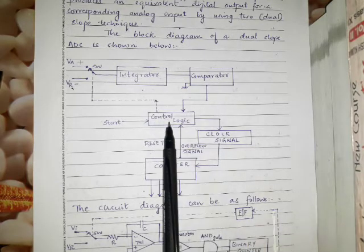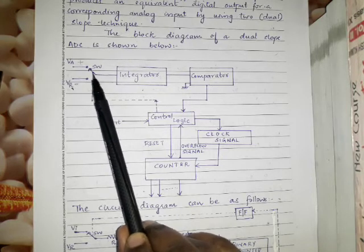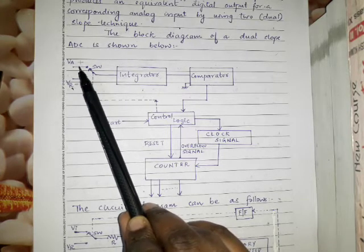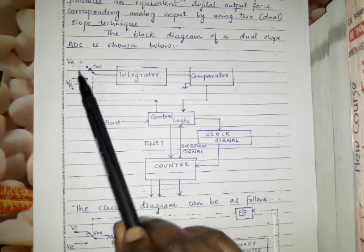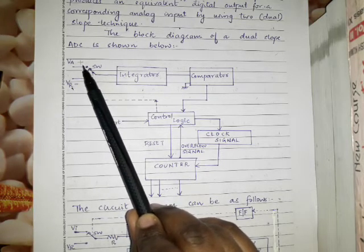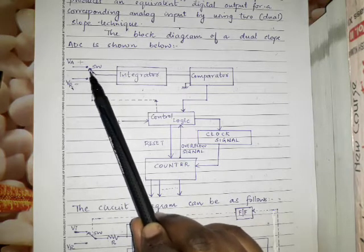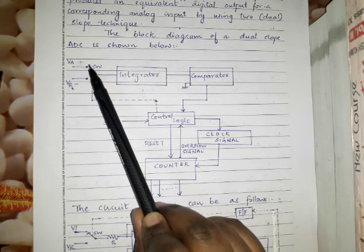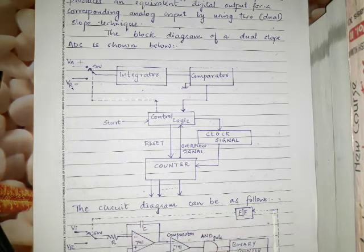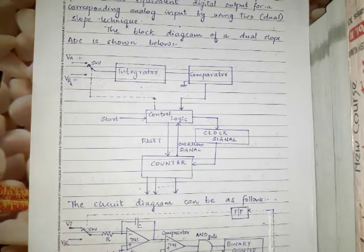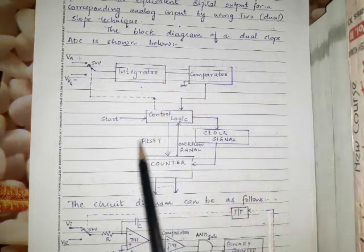Now let us see the block diagram of the dual slope ADC. The main circuits in this block diagram are: integrator, comparator, control logic, clock signal, and counter. There is a switch with two inputs — the analog input VA, which is normally a positive value, and the reference input VR, which is a negative value. The switch connects either to VA or to VR.